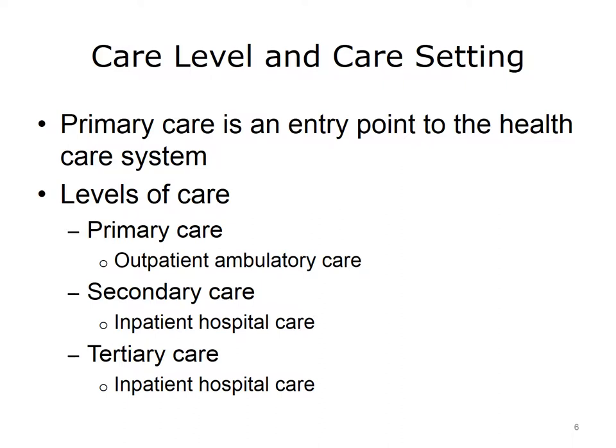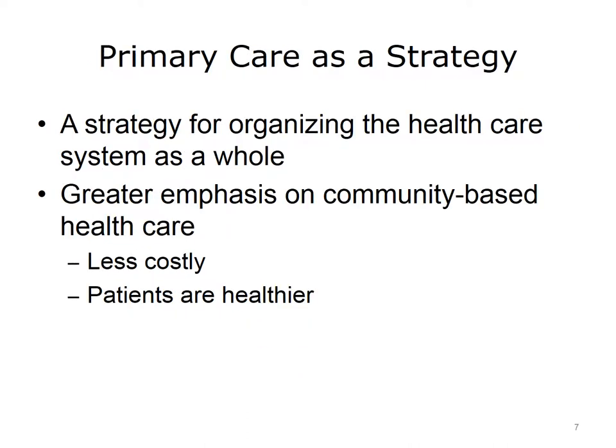Primary care may be distinguished by the fact that it is an ambulatory model of care, as opposed to an inpatient model of care. Primary care is considered the entry point to the healthcare system, provided outside the hospital and typically referred to as outpatient or ambulatory care. Other care levels include secondary care, which is inpatient care provided by community hospitals, and tertiary care, provided by medical centers and teaching hospitals. Primary care can also be defined as a strategy for organizing the healthcare system, placing greater emphasis on community-based healthcare.